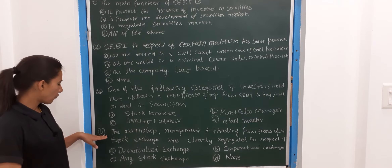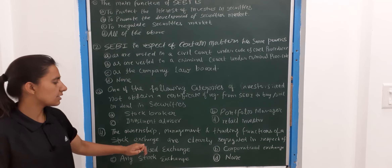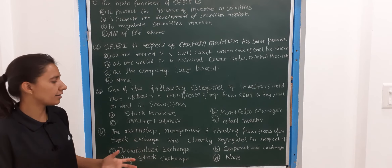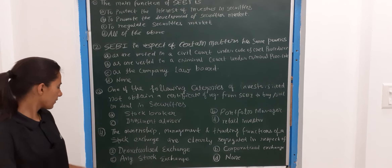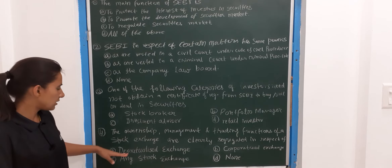Fourth question: the ownership, management, and trading functions of a stock exchange are clearly segregated in which one? A is demutualized exchange, B is corporatized exchange, C is any stock exchange, D is none. The correct answer here is demutualized exchange.